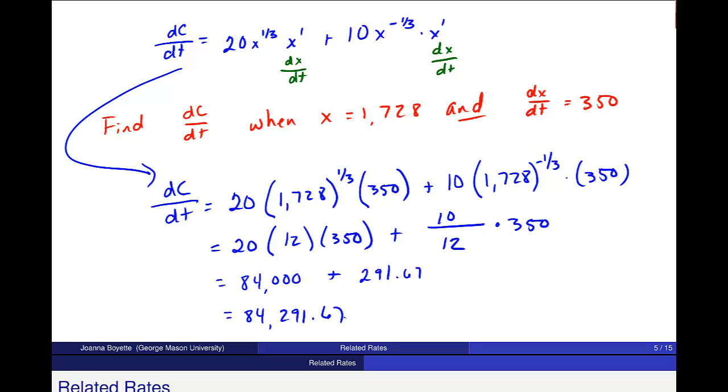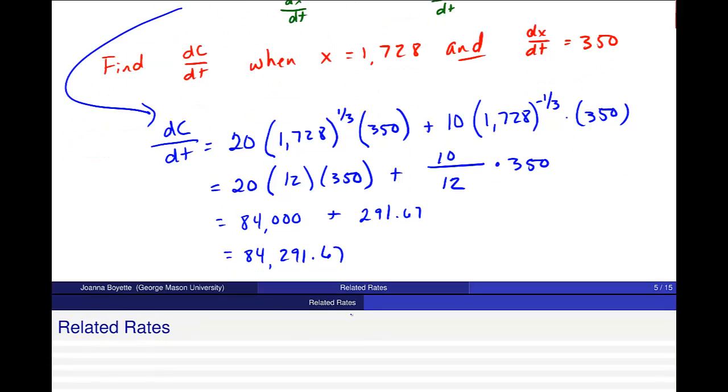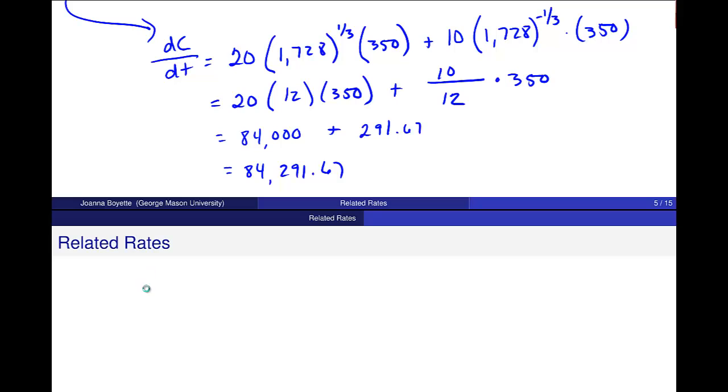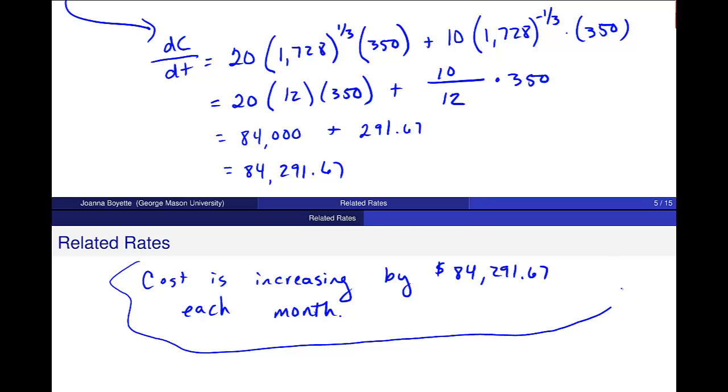I get 84,291 dollars and 67 cents as this DCDT. So just interpretation. The cost is increasing by this amount of money, 84,000 dollars, each month. Because that's the time, the amount of time that I'm talking about. That's the amount of time that I was looking out for the change in X. I had that DXDT, 350 additional printers per month. And then I'm looking at this other cost change per month. So those are two rates that are related when you talk about how they're related to time. And those are kind of this idea behind related rates.